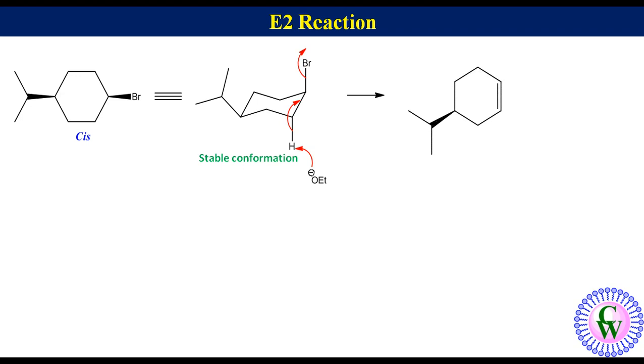Now let's take the trans isomer. The stable conformation of the trans isomer can be drawn like this. Here the bromo group is equatorial.